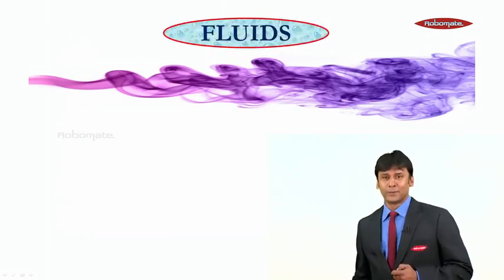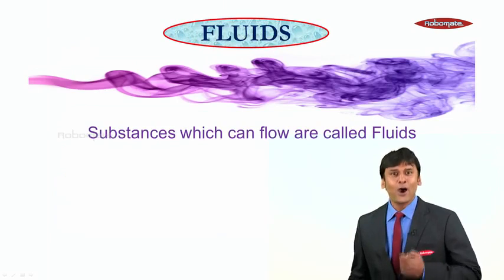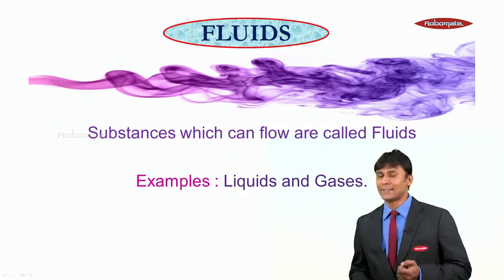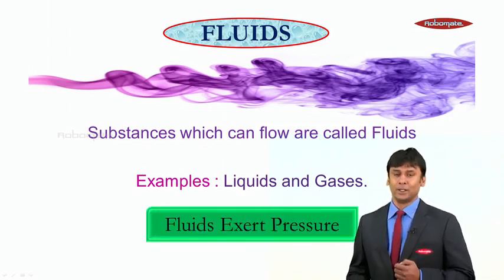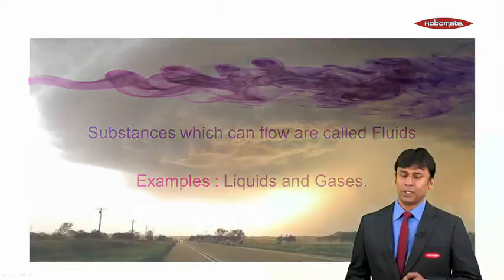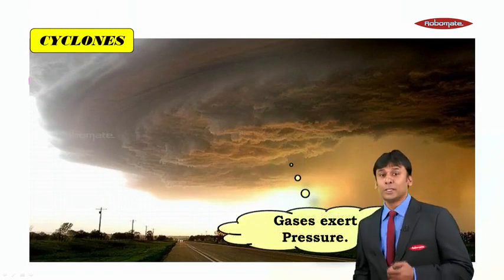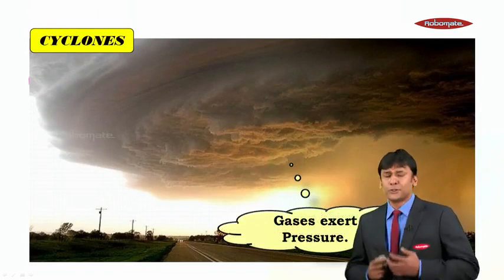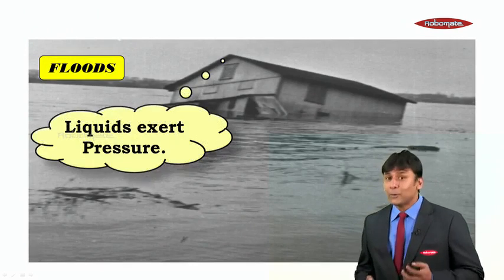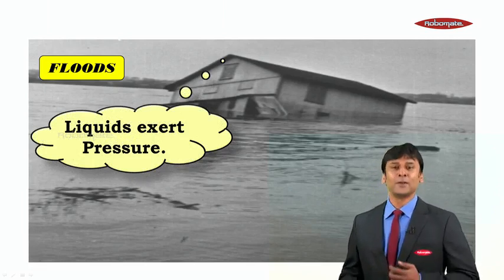Looking at fluids — students, what are fluids? Substances which can flow are called fluids. Examples: liquids are fluids and gases are fluids. One most important thing about fluids is that fluids exert pressure. For example, during cyclones you must have seen gases exert a tremendous amount of pressure, and during floods you must have seen liquids exert a huge amount of pressure. So fluids can exert pressure.